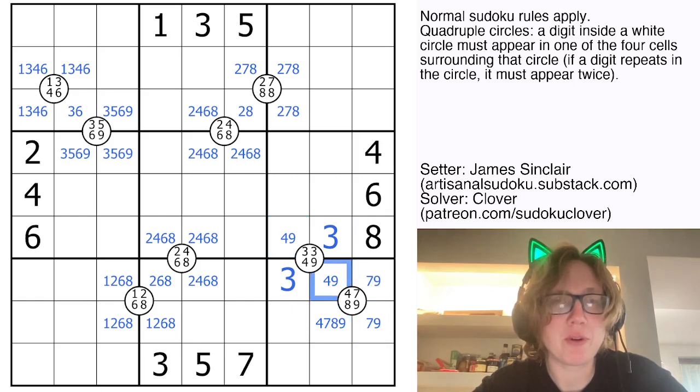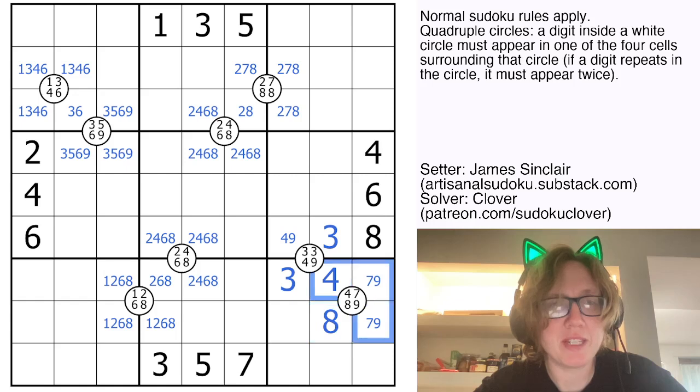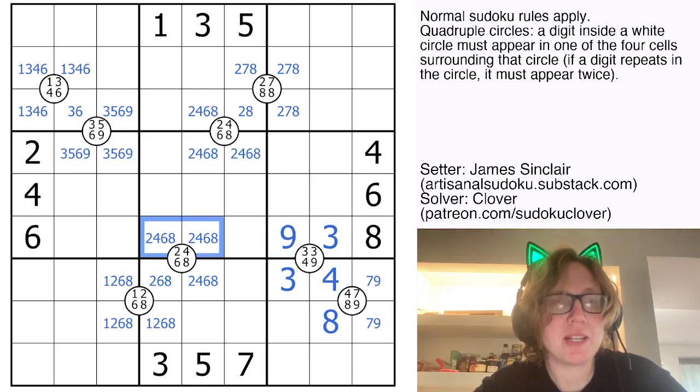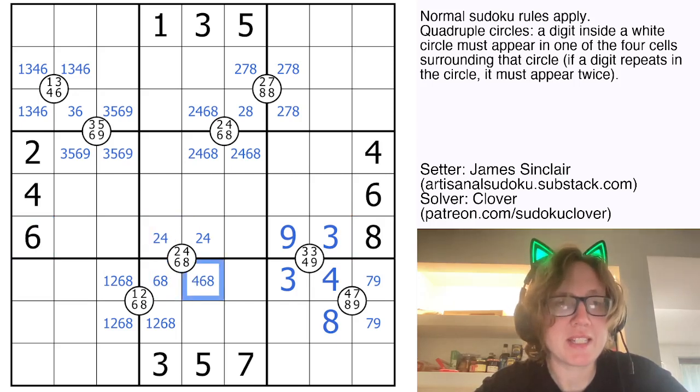So that gives me a four and an eight for this quadruple here. And that makes my last digit in this quadruple a nine. These can't be six or eight because of the six and the eight in the row. So that is a two, four pair. And this is now a six, eight pair.